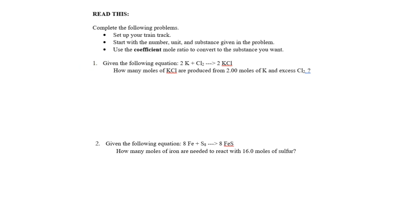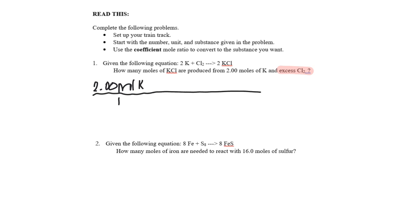Question one: we have a balanced reaction. We want to know how many moles of KCl can be made from two moles of potassium, with excess Cl2. When it says excess, I can essentially ignore it — it just means there's plenty of chlorine so all the potassium gets used up. So first, I set up my train tracks: two moles of potassium over one. Then I bring down moles of potassium — that's where I'm coming from — and moles of KCl goes to the top.